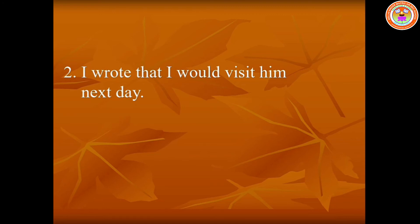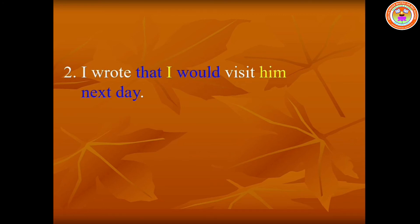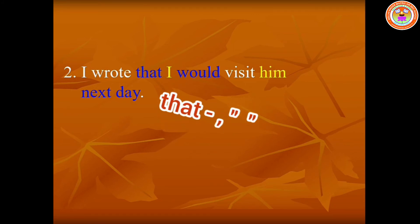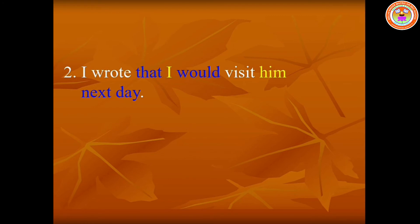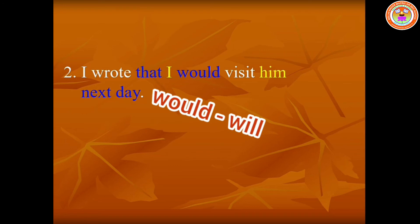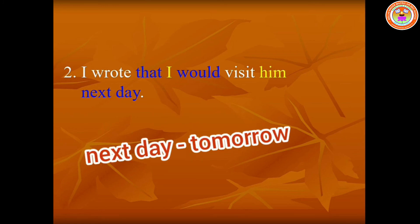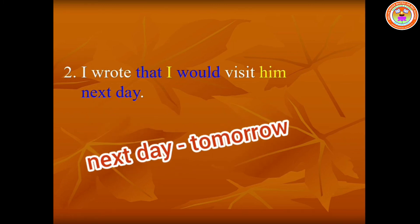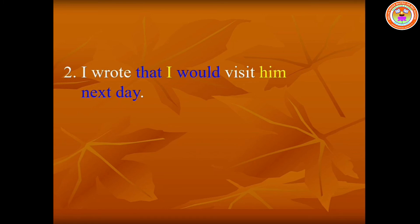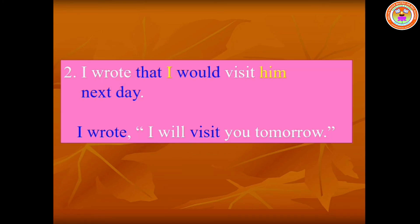Number two: 'I wrote that I would visit him next day.' Dear children, no need to change the reporting verb 'wrote'. We have to change the conjunction 'that' into a comma and quotation mark. The pronoun 'I' should remain 'I', the verb 'would' should be changed as 'will', 'him' should be changed as 'you', and 'next day' should be changed as 'tomorrow'. The answer is: I wrote, 'I will visit you tomorrow.'